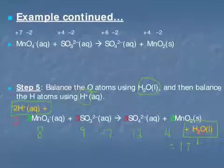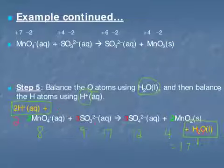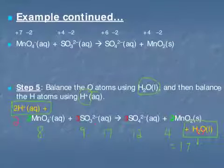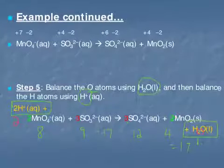Now if we were balancing in acidic conditions we'd be done, because we have hydrogen ions present. However, we were told this is balanced in a basic, hydroxide environment. Therefore, we need to add hydroxides to both sides in order to cancel out any excess hydrogen ions.